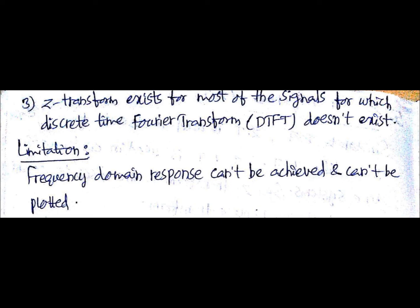Finally, the limitation will be that frequency domain response cannot be achieved and cannot be plotted using Z-transform. What is frequency domain response? That means plot of the output with the variation of frequency. In control system, you might have seen the frequency domain response. That cannot be achieved using Z-transform. That is the limitation.